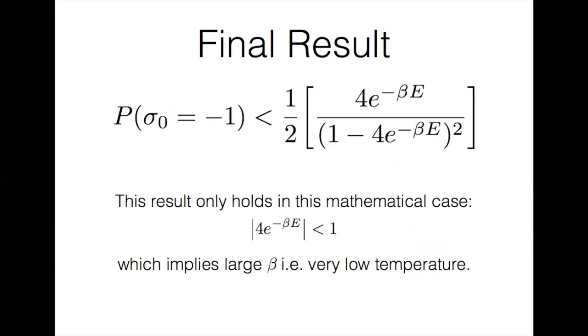Now this result only holds in the mathematical case where 4 times e to the negative beta e, the absolute value of that, is less than 1, which implies that beta is large, or we have a very low temperature. So in this case, beta is large enough that we can make the probability arbitrarily small, and we therefore have spontaneous magnetization.